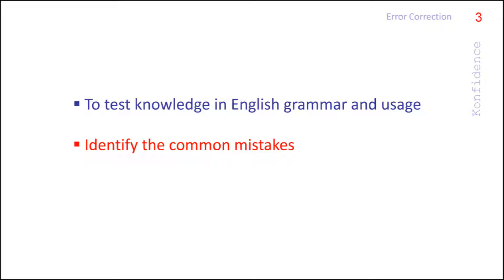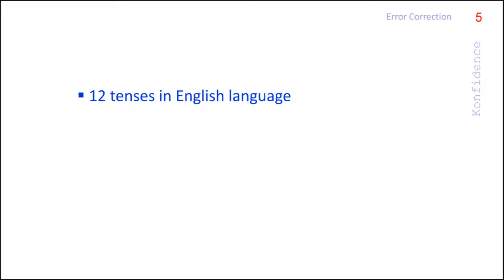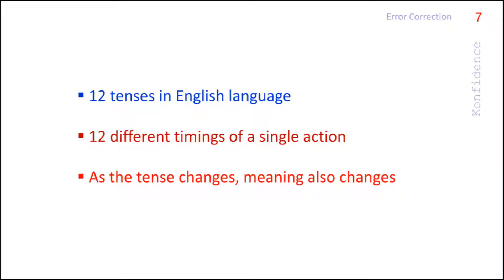The sentences may vary but the errors will be the same. Hence, let us spot out the important grammatical mistakes in English. Tense is the grammatical term for time. We cannot utter a single sentence without relating it with time. There are 12 tenses in English language, meaning we can express 12 different timings of a single action. When the tense or time of an action changes, its meaning also changes.